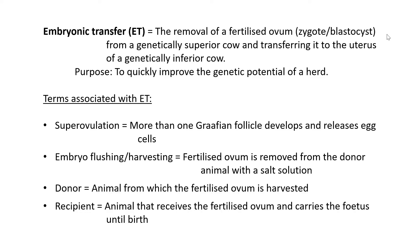The terms superior and inferior are relative to what the farmer thinks is superior and inferior — it's based on opinion. If the farmer wants to produce cows that produce a lot of milk, the ones with genes that create offspring producing a lot of milk would be the superior cow. The inferior one in this case would be the one that generally does not produce offspring that create a lot of milk. It depends on what the farmer wants to breed.